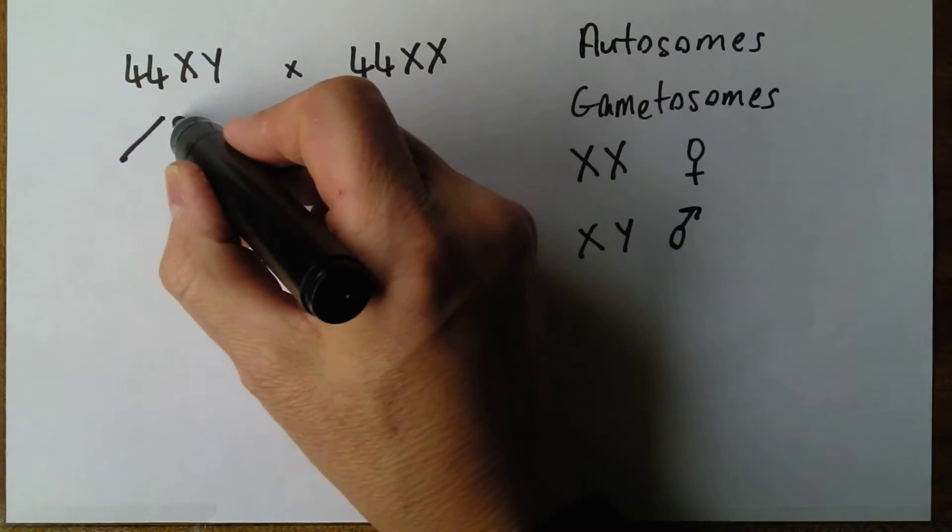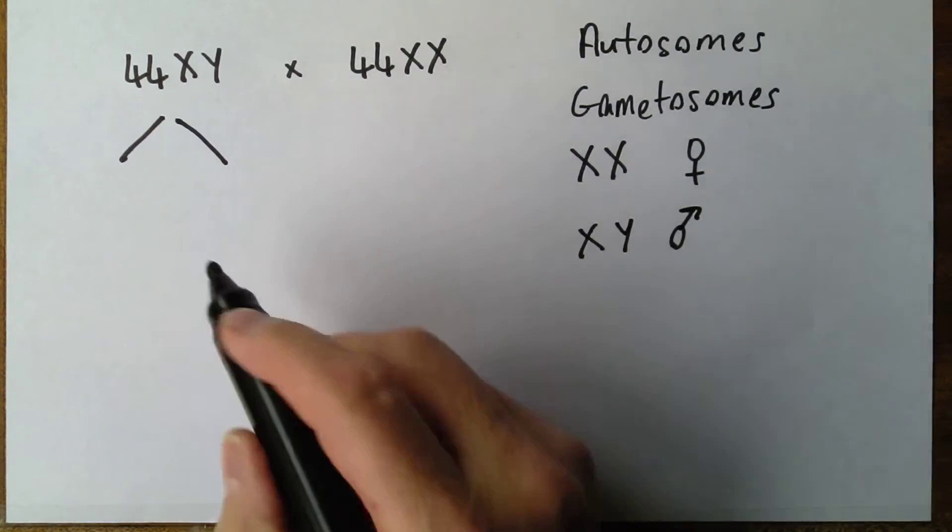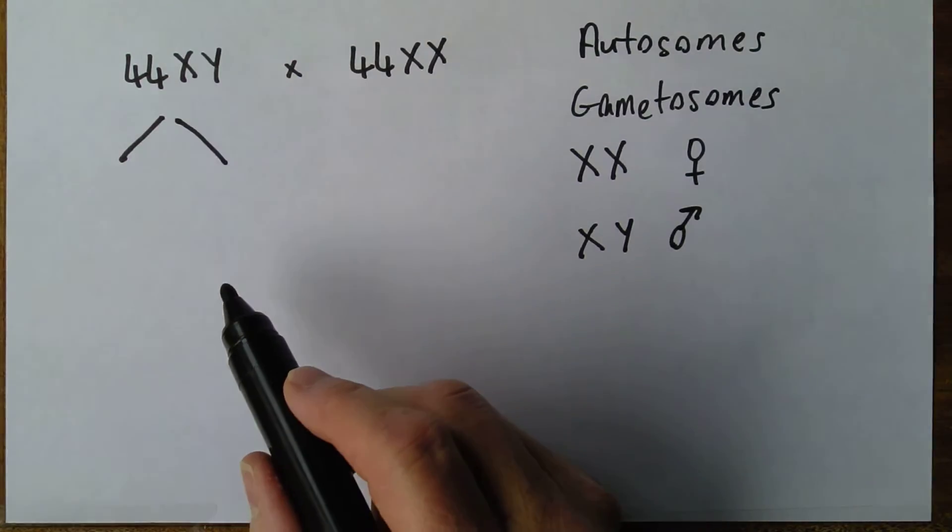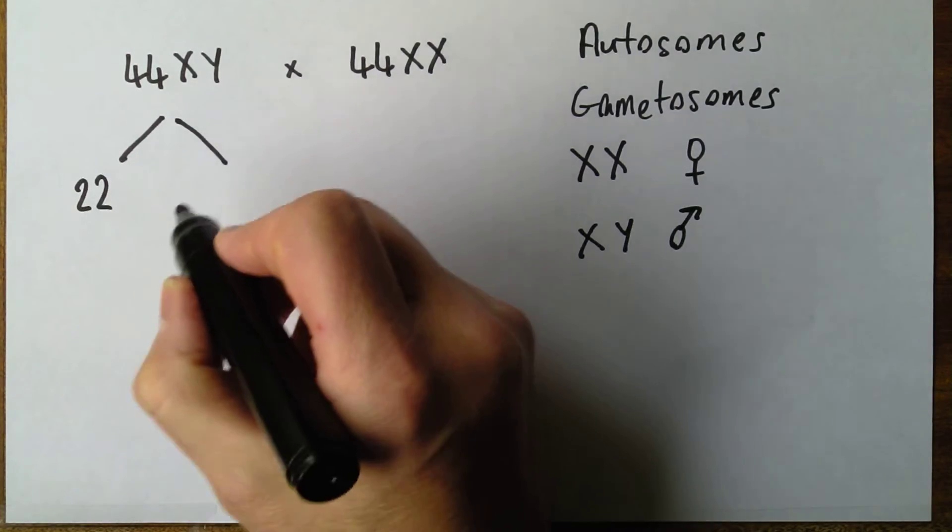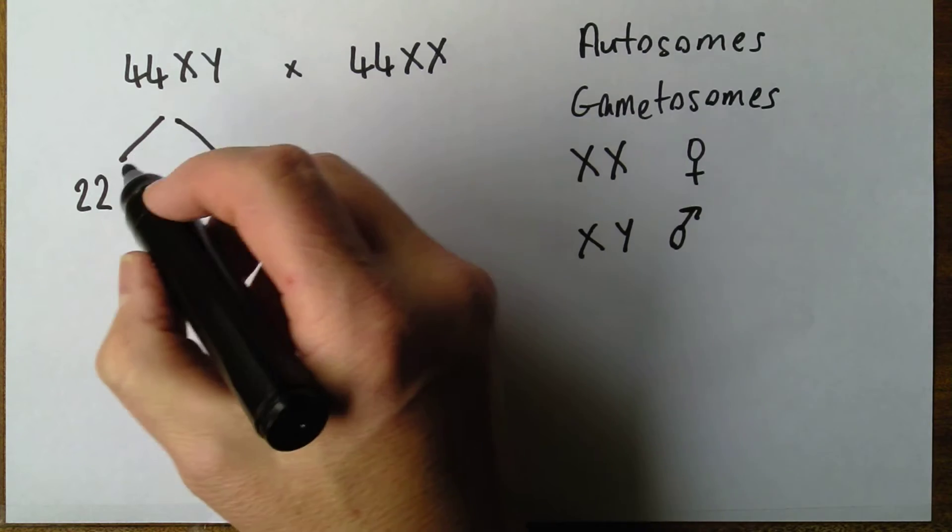Now of course, in order to reproduce, the man must first make sperm and we need 23 pairs of chromosomes in each sperm. So that's 22 autosomes and we're going to get an X or a Y.